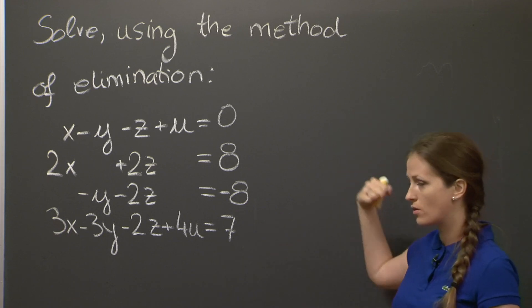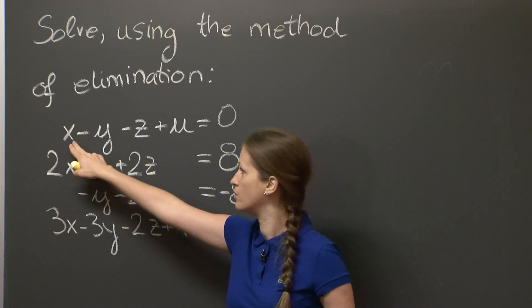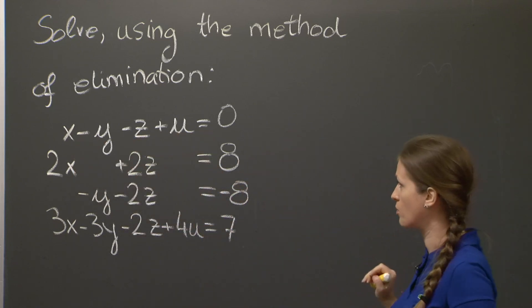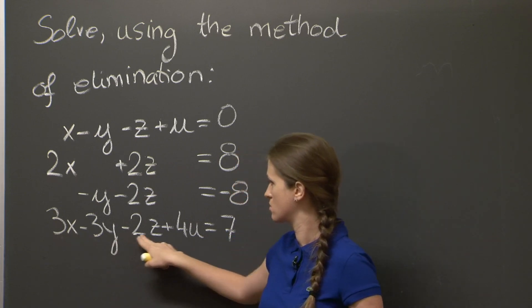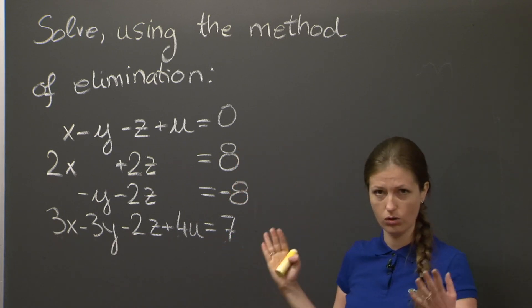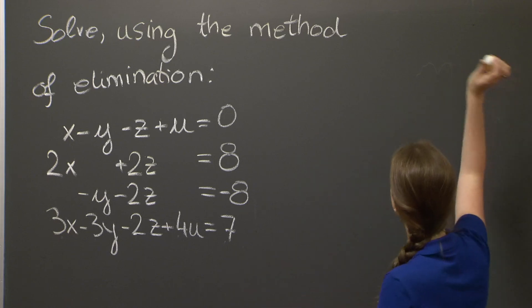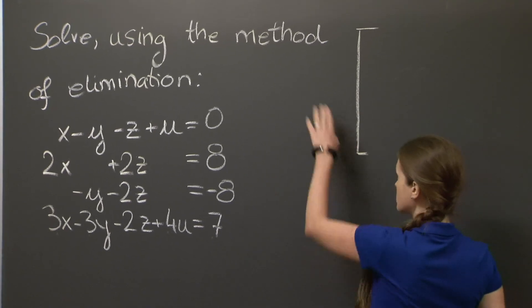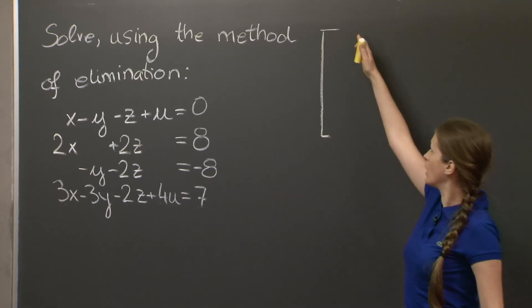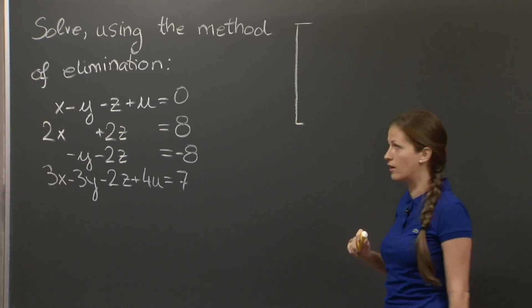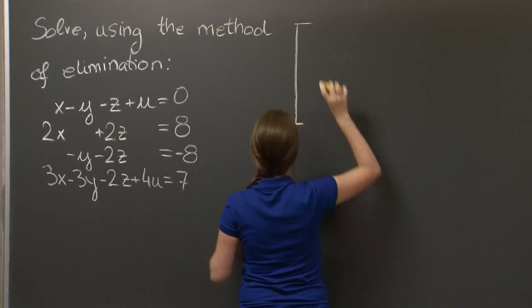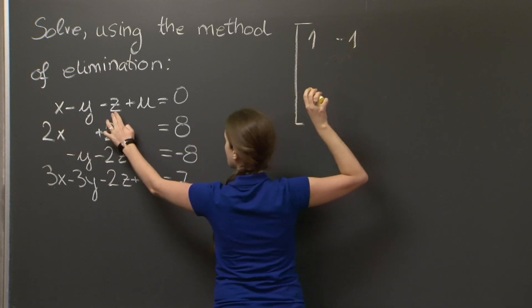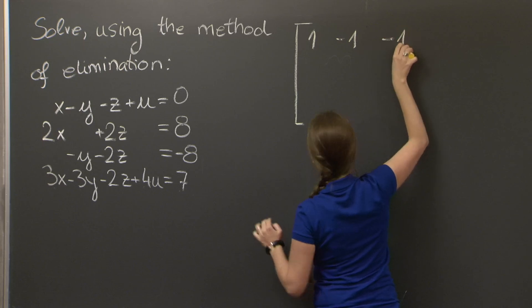As we're going to do this series of arithmetic operations, we don't really want to copy the names of the variables and the equality signs every time. So we're going to keep the important information, which are these coefficients here, in a matrix. So let's write a matrix. Each row is going to correspond to an equation, and each column is going to correspond to an unknown. So the first row is 1, minus 1, minus 1, 1.